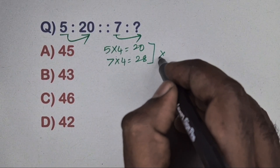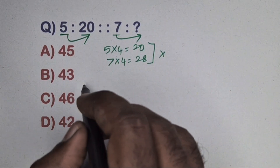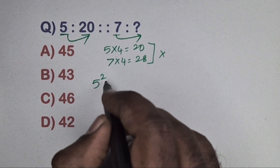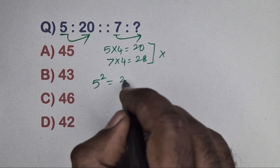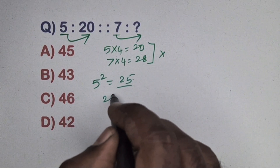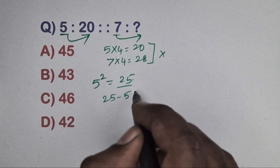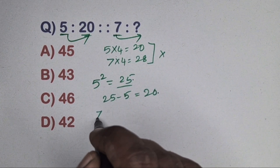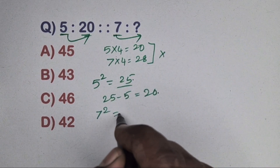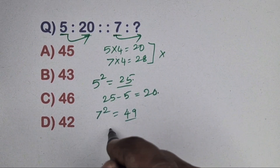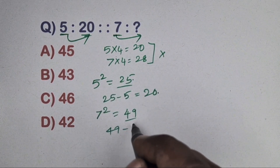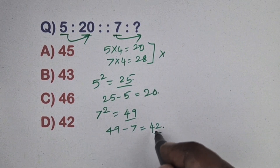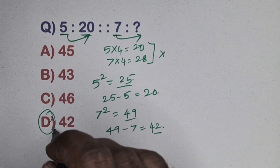The correct method here is the square-minus-number method. Take x² and subtract the same number. For example, 25 minus 5 is 20. Same way, x² equals 49, so take 49 minus 7 and get 42. Option D is the correct answer.